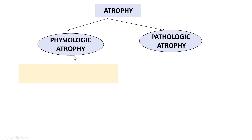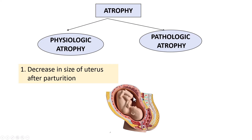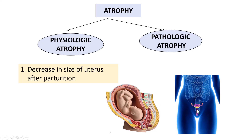Physiologic atrophy means atrophy which occurs under physiological conditions. For example, there is involution of the uterus after parturition — normally during the pregnant state, the uterus has to enlarge to accommodate the growing fetus. After the birth of the baby, after delivery, the uterus will come back and regain its normal shape and size. That's called involution of the uterus after parturition, and that's an example of physiologic atrophy.